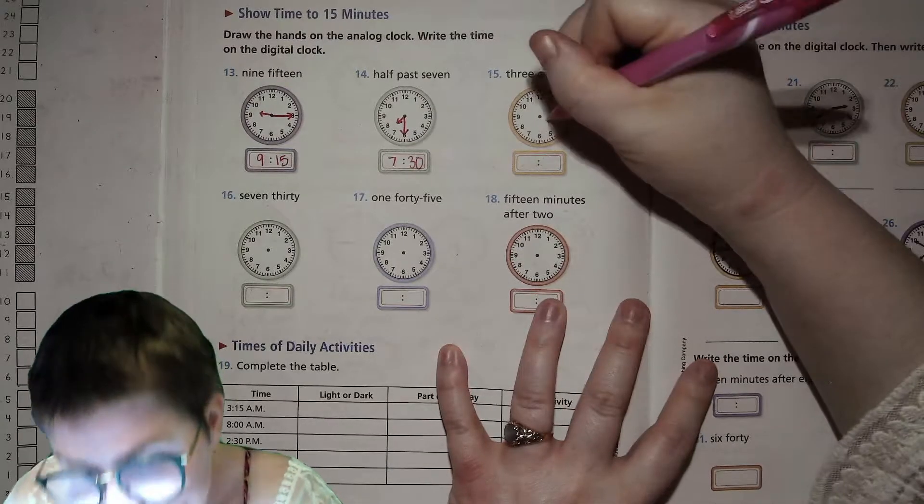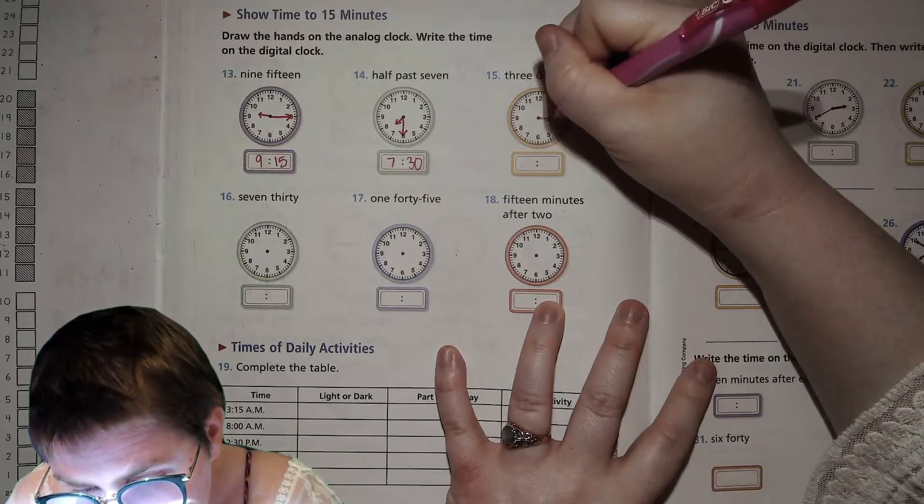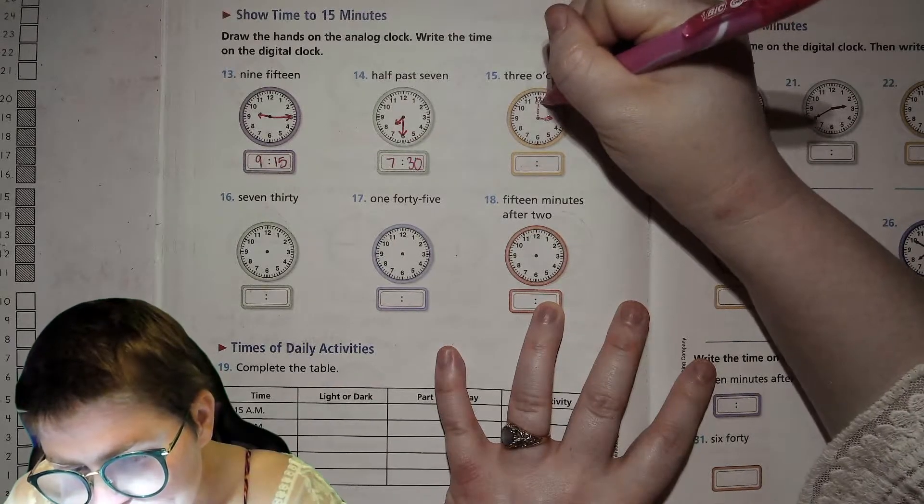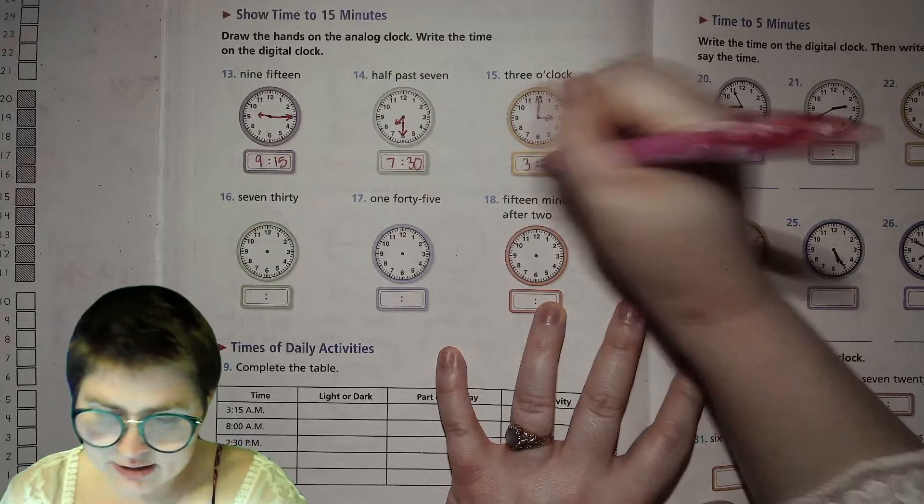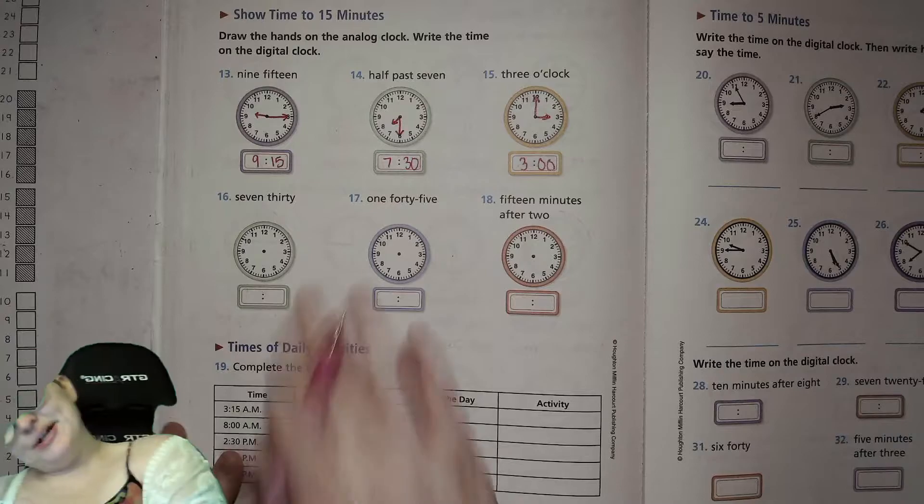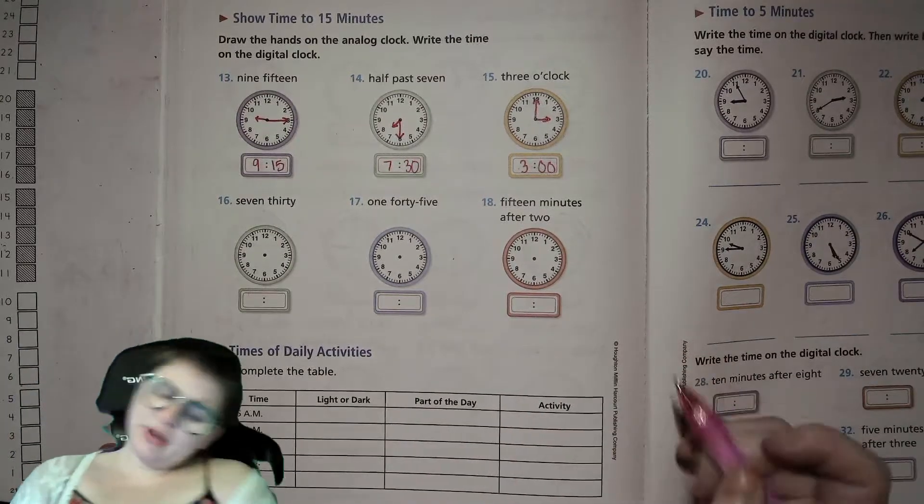3 o'clock, our hour hand is going to be on the 3. And our minute hand is going to be on the 0, which looks like a 12. 3, 0, 0. You go ahead and try these next ones on your own.